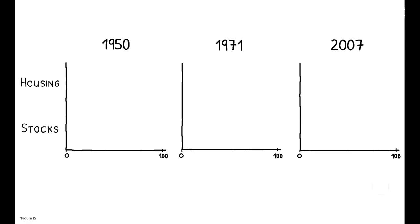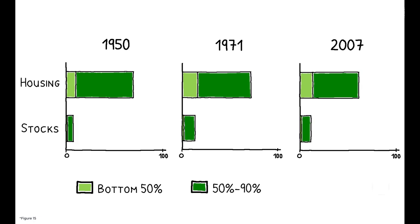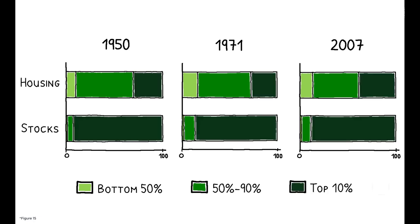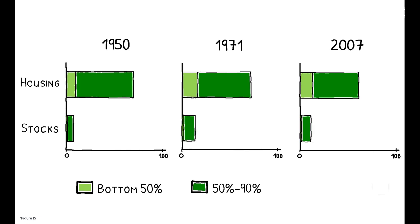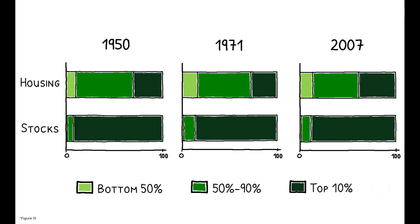The top row here shows the share of total housing owned by each wealth group in 1950, 1971, and 2007, while the bottom row shows the same for stocks. Consistently across time, the bottom 90% has always held a sizable portion of all housing wealth, but only a tiny fraction of stocks. Put another way, houses are the asset of the bottom 90%, while stocks are the asset of the wealthy.